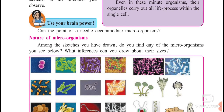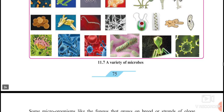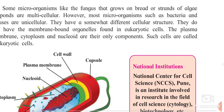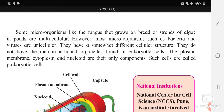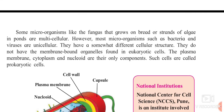Some microorganisms like fungus that grows on bread, or strands of algae in ponds, are multicellular. However, most organisms such as bacteria are unicellular. Bacteria do not have membrane-bound organelles found in eukaryotic cells. Eukaryotic cells have a nucleus with double membrane, ribosomes, and Golgi bodies, whereas prokaryotic cells lack these membrane-bound organelles — the nucleus and other structures are absent.